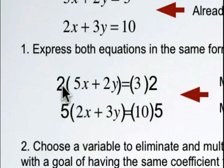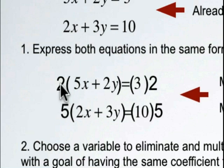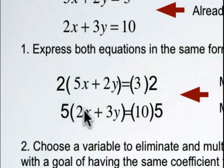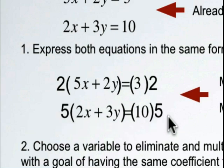The other option would have been to multiply the first equation by two and the second equation by five, because two times 5x gives 10x and five times 2x also gives 10x. But we're going to use the approach where we multiply the first equation by three and the second equation by two.